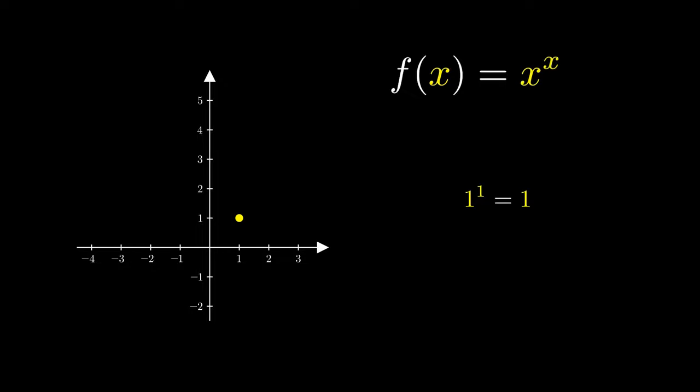Let's first attempt to graph the function y equals x to the x. When x equals 1, we obtain 1 to the 1, which is just 1. Let's plot that point. When we substitute x equals 2, we get 2 squared, which is 2 multiplied by 2. This gives us 4.